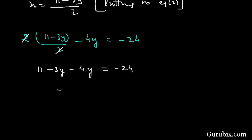This gives us minus 7y equals to minus 35, which means y equals to 5.